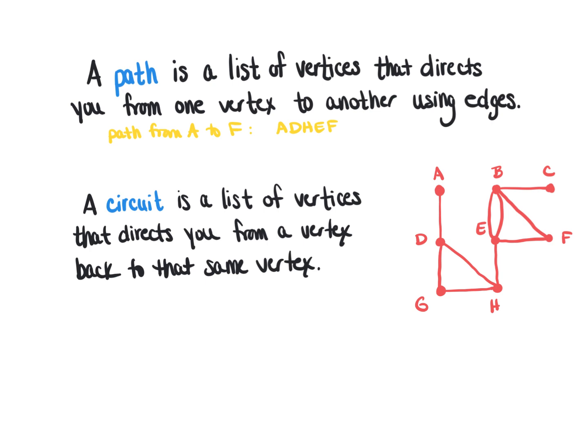I could come up with another path from A to F that looks like this: travel from A to D, down to G, then to H, to E, then to B, and then to F. The whole point of a path is that you start at one vertex and end at another, but the path is not unique.